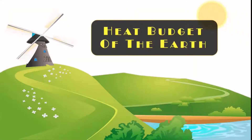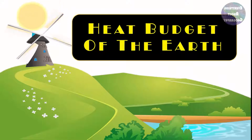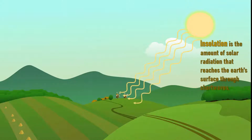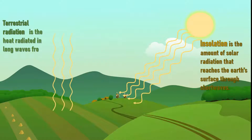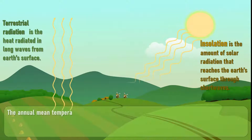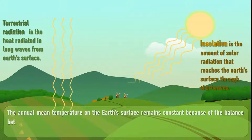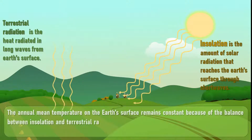Heat budget of the earth: Insolation is the amount of solar radiation that reaches the earth's surface through short waves, whereas terrestrial radiation is the heat radiated in long waves from earth's surface. The annual mean temperature on the earth's surface always remains constant because there is a balance between insolation and terrestrial radiation. This balance is known as the heat budget of the earth.